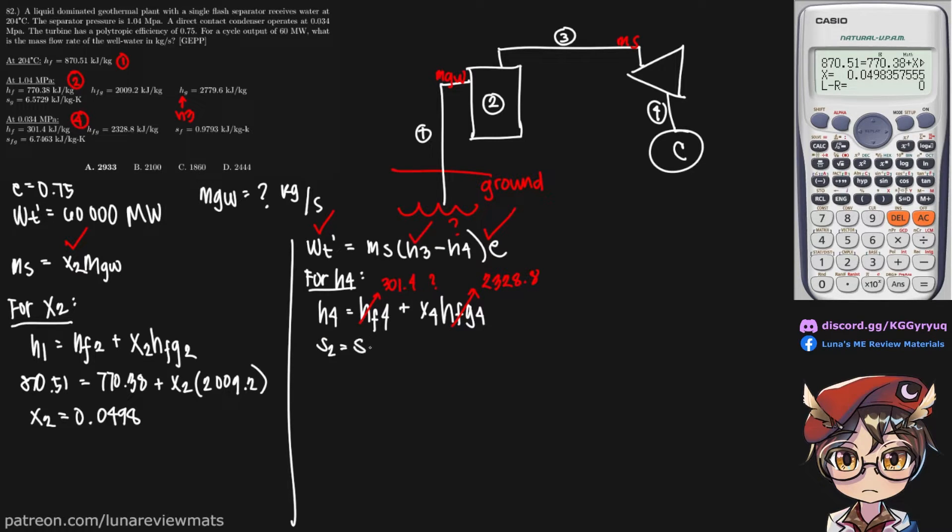So let's write that down. S2 is equal to S3 is equal to S4 is equal to S_F4 plus X4 and S_FG4. Alright. So S_F4 is 0.9793. So S_FG4 is 6.7463. And finally S2 is equal to S3. Let's see here. That is 6.5729.